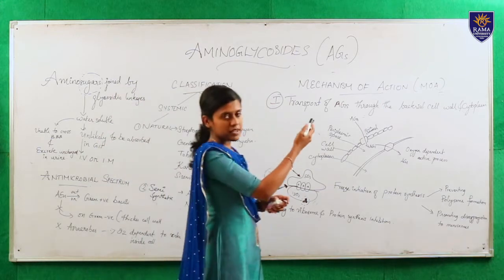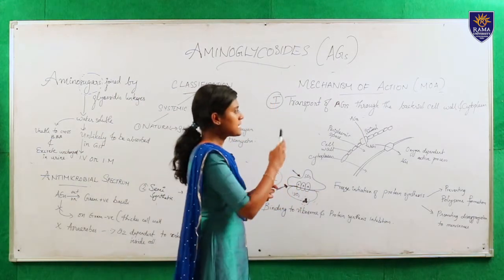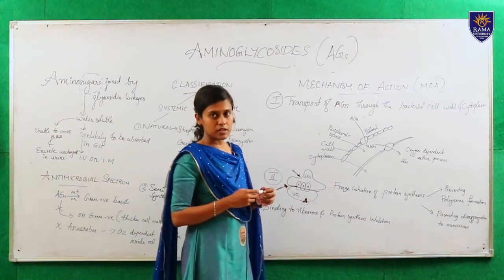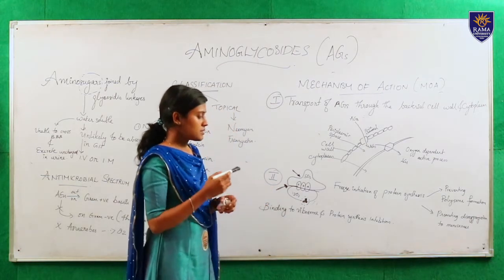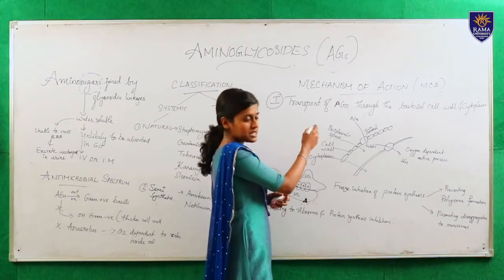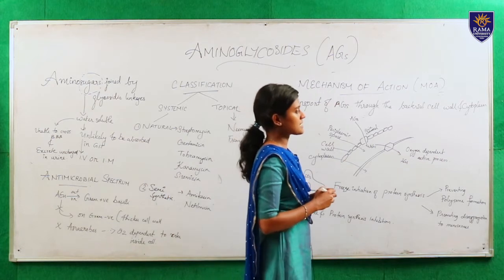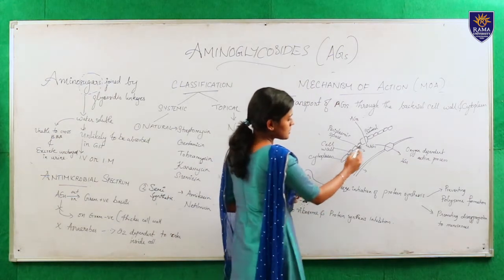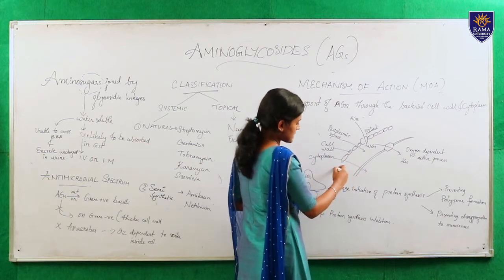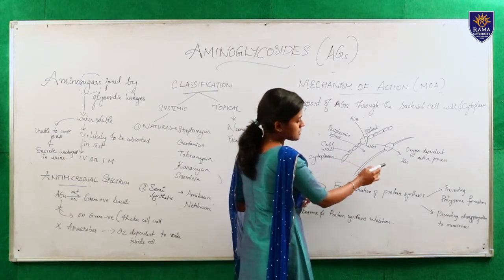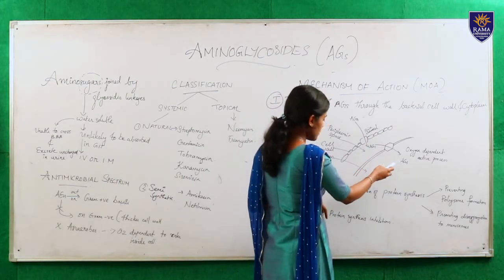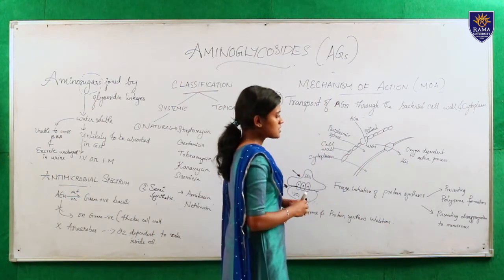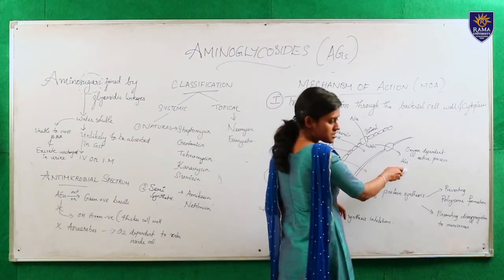Next we shall move on to the mechanism of action of aminoglycosides. The mechanism is divided into two steps: first, the transport of aminoglycosides through the bacterial cell wall and cytoplasm; and the next is the binding of ribosomes and inhibition of protein synthesis. Aminoglycosides enter into the periplasmic space through the porin channel and from there they are transported into the cytoplasm by an oxygen-dependent active process, so only aerobes can pass into the cytoplasm.